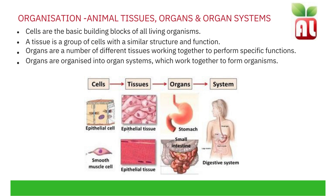The stomach, the small intestine, large intestine, liver and gallbladder are all organs which are part of the digestive system. Other systems include the circulatory system and the respiratory system.